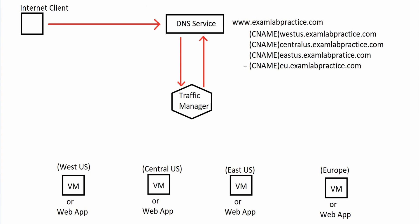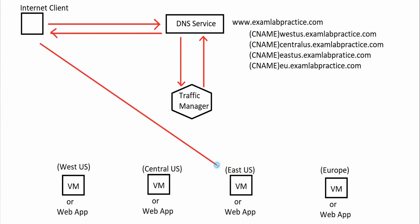The DNS service then replies back with the appropriate location — for example, if it was East US, it replies back with that information, which goes back to the client. The client then connects directly to that location. A lot of people think the client is passing through the traffic manager to connect, but that's not actually the case. The client connects directly to that location, whether it's closest to West US, Central US, Europe, or wherever.